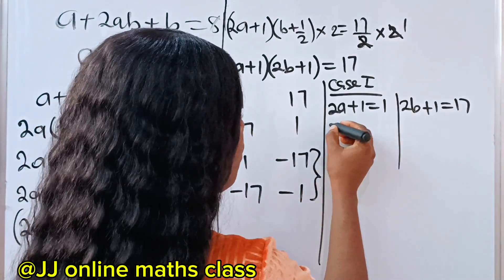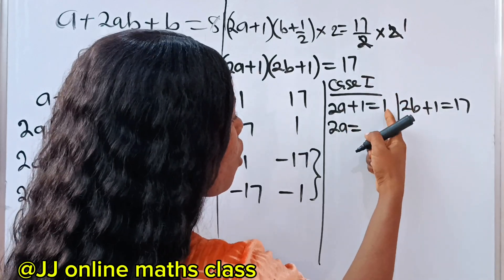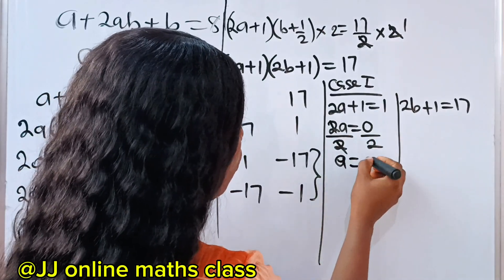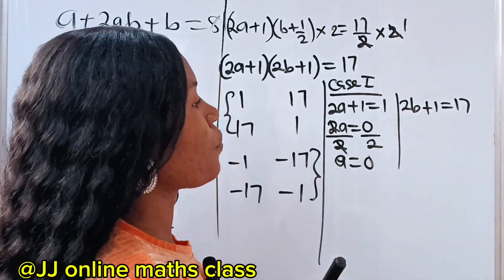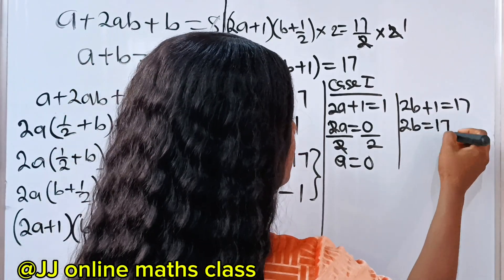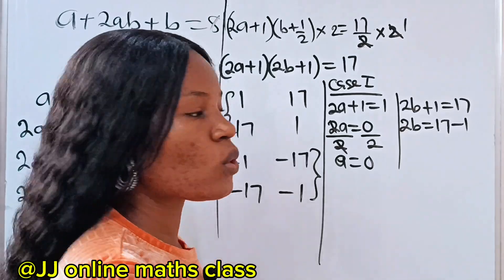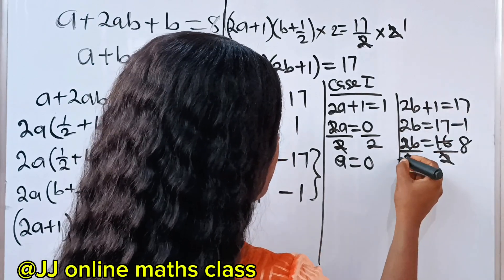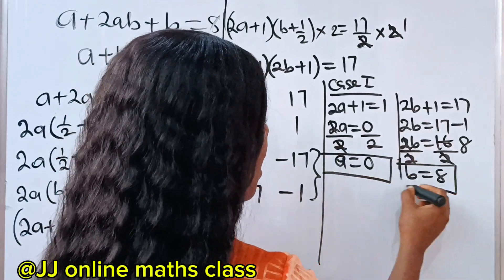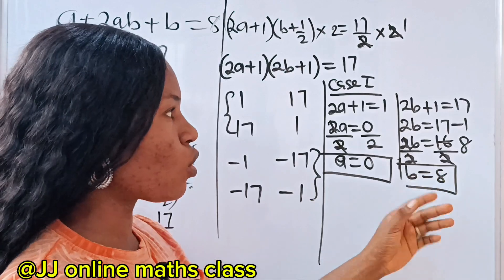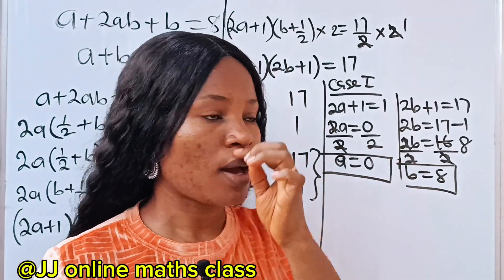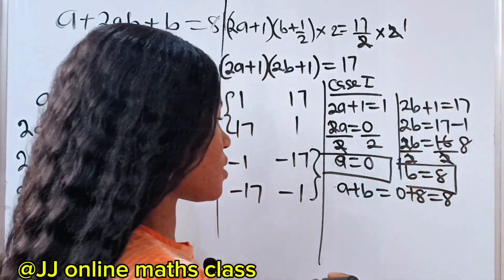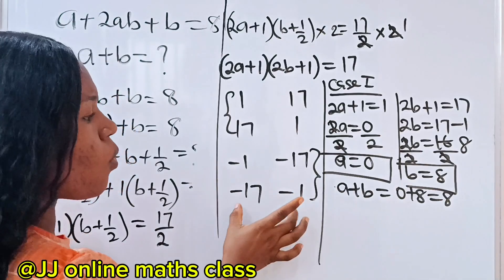Solving Case 1: from 2a + 1 = 1, we get 2a = 0, so a = 0. From 2b + 1 = 17, we get 2b = 16, so b = 8. Therefore a + b for Case 1 equals 0 + 8, which is equal to 8.